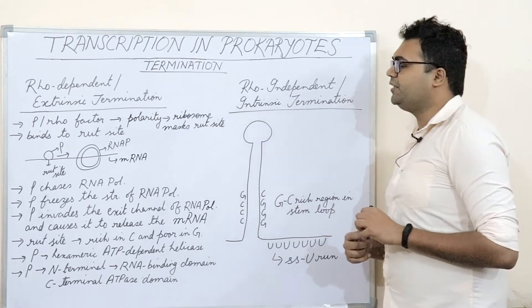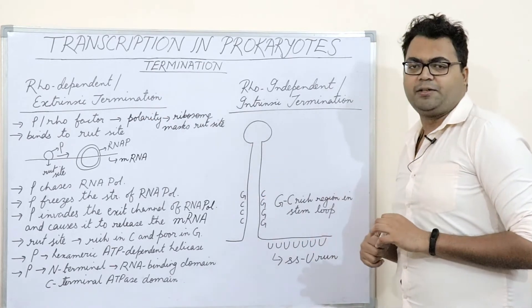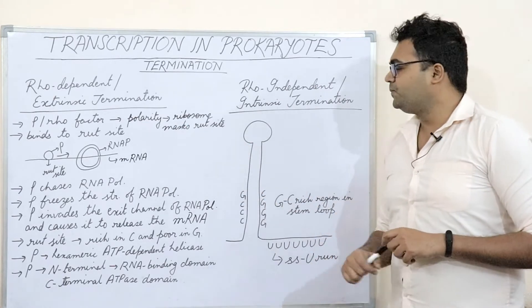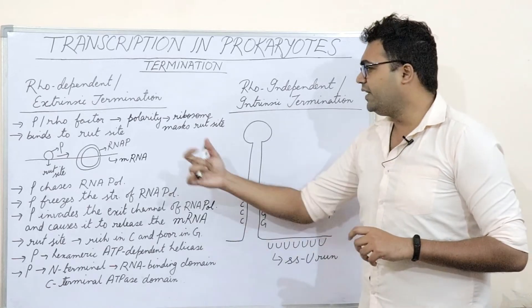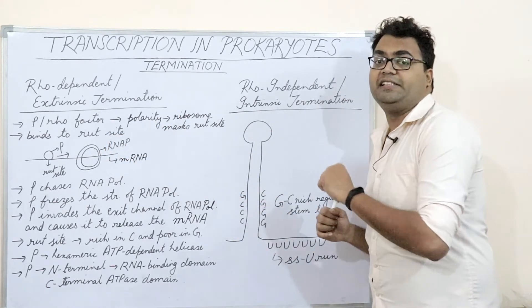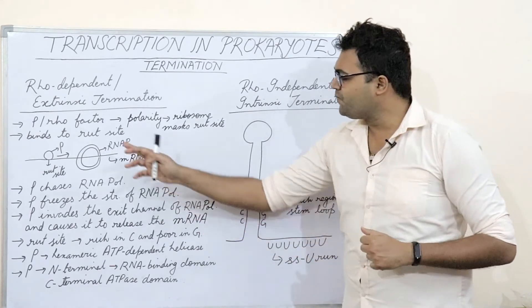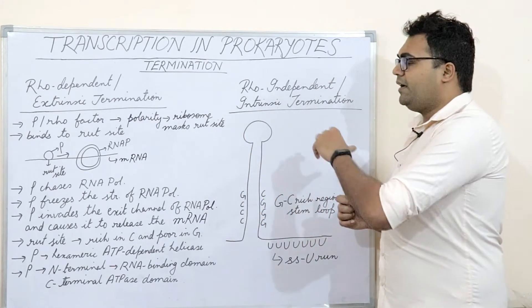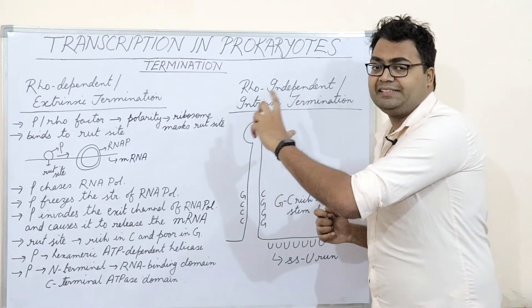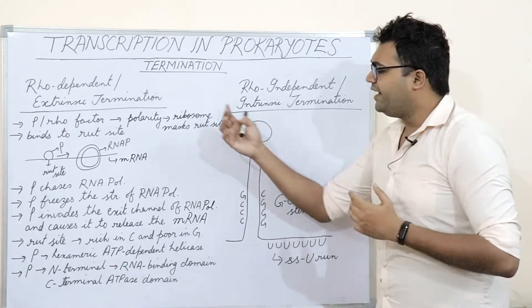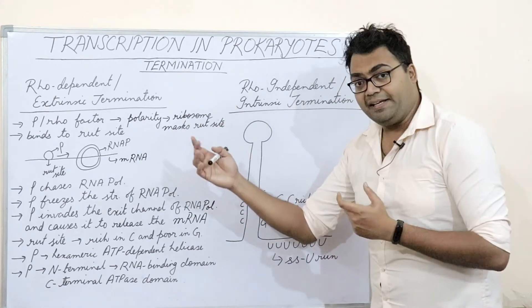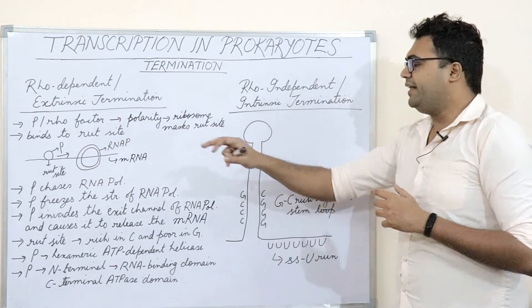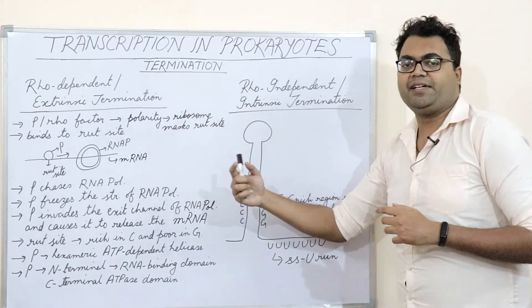Then we switch to rho-dependent, or extrinsic, termination. Extrinsic termination means you need an ancillary or auxiliary factor — the factor known as the rho factor. The rho factor binds to the RUT site, which stands for Rho Utilization Sequence. The rho factor is an RNA- and ATP-dependent helicase. It is also hexameric in structure, having 6 subunits — just like the DNA helicase DnaC. It binds to the RNA at the RUT site and causes helicase activity, meaning it can denature the RNA-DNA hybrid.